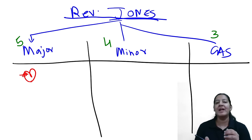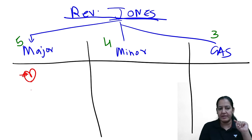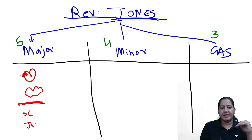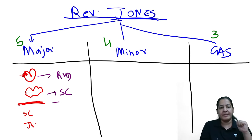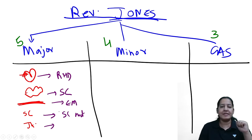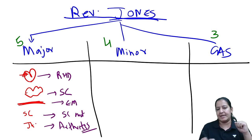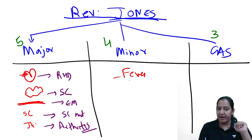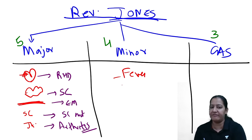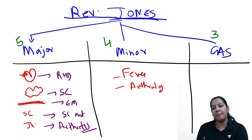Recapping the Jones criteria: the five major criteria are the five organs — heart (rheumatic heart disease), brain (Sydenham's chorea), skin (erythema marginata), subcutaneous tissue (subcutaneous nodules), and joints. In the joints it is inflammation — arthritis — that is the major criterion. The minor criteria include fever, because it is a bacterial infection and the child will have fever during tonsillitis.